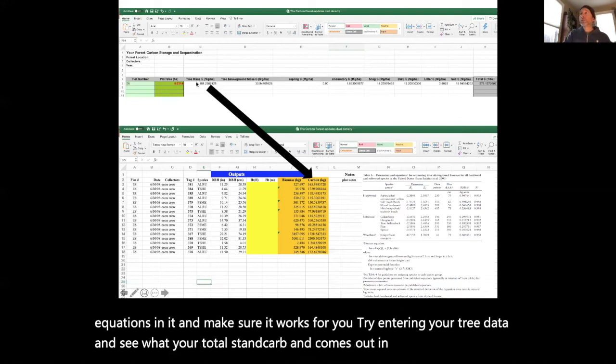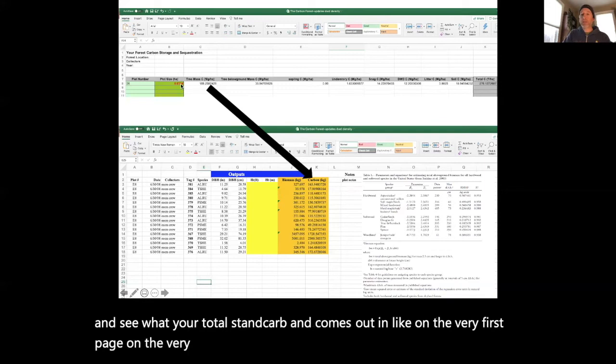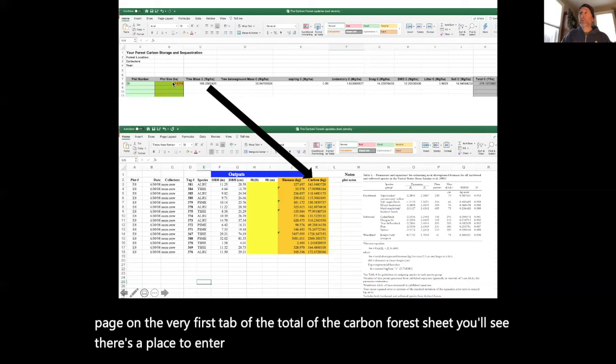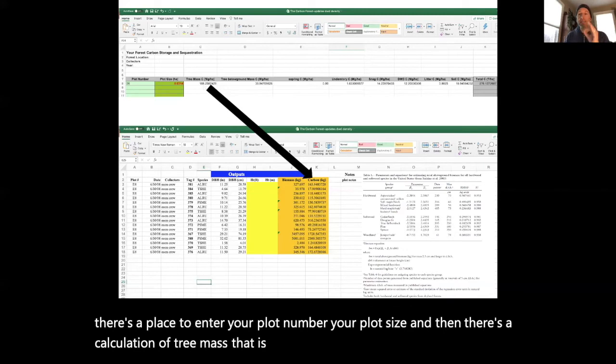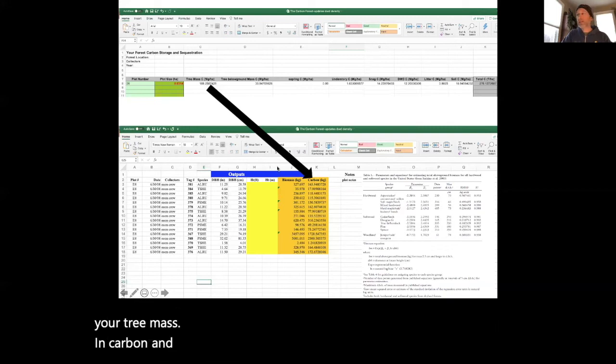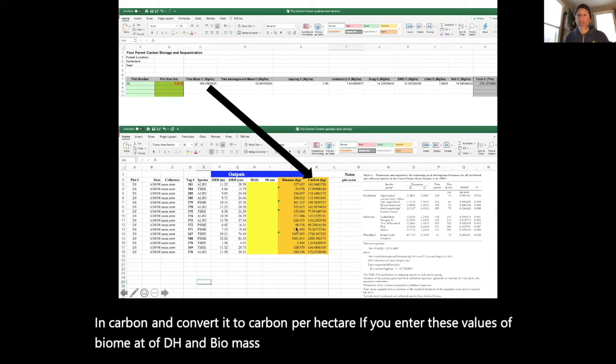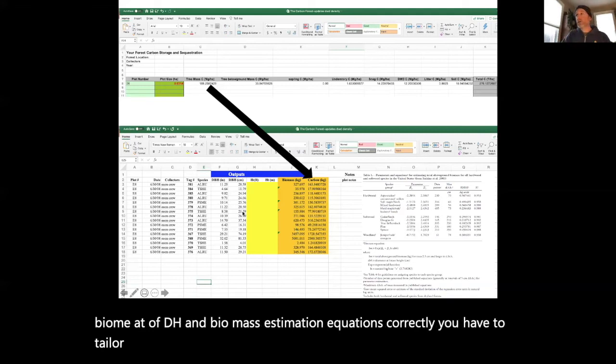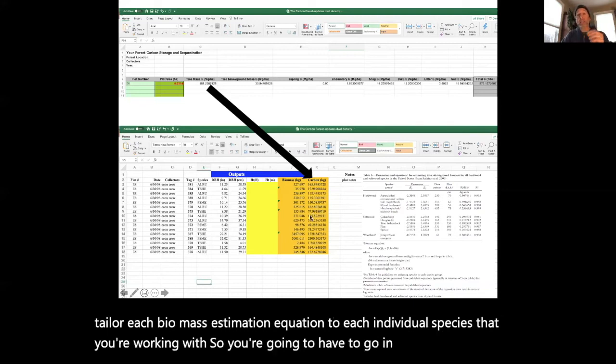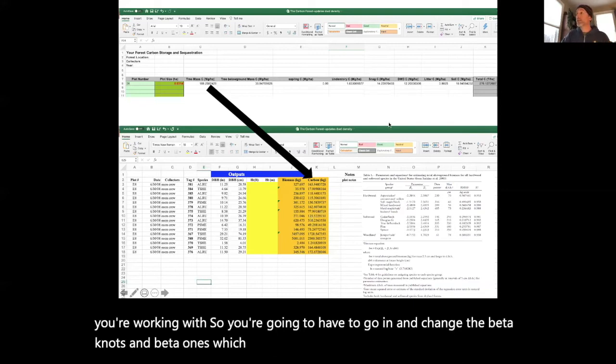On the very first page, on the very first tab of the carbon forest sheet, you'll see there's a place to enter your plot number, your plot size, and then there's a calculation of tree mass that is automatic. It should automatically gather your tree mass in carbon and convert it to carbon per hectare if you enter the values of DBH and biomass estimation equations correctly. You'll have to tailor each biomass estimation equation to each individual species you're working with, so you're going to have to go in and change the beta 0s and beta 1s.